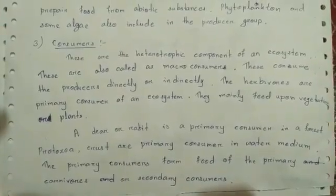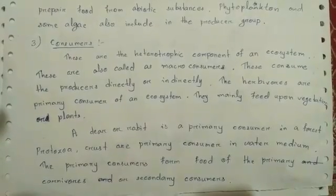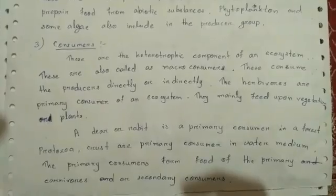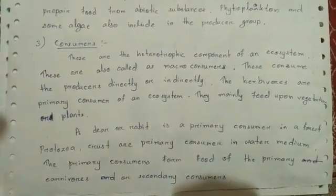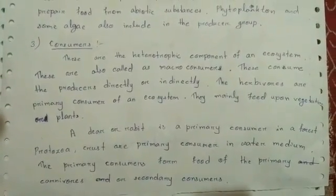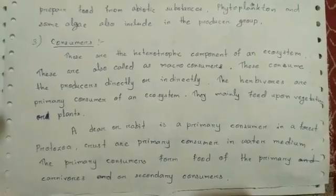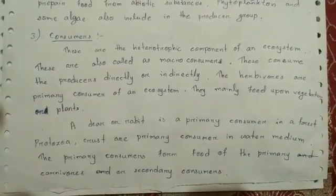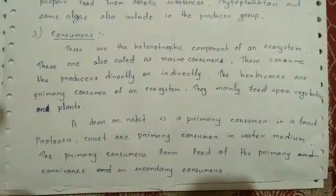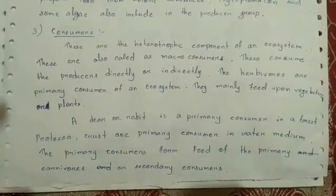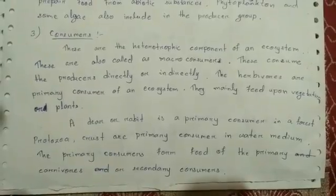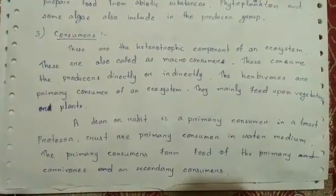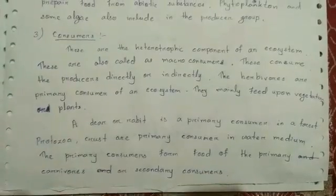The third component is consumers. These are the heterotrophic components of an ecosystem, also called macro-consumers. They consume the producers directly or indirectly. Herbivores are the primary consumers; they mainly feed upon vegetation or plants. A deer or rabbit is a primary consumer in a forest, while protozoa and crustaceans are primary consumers in a water medium.